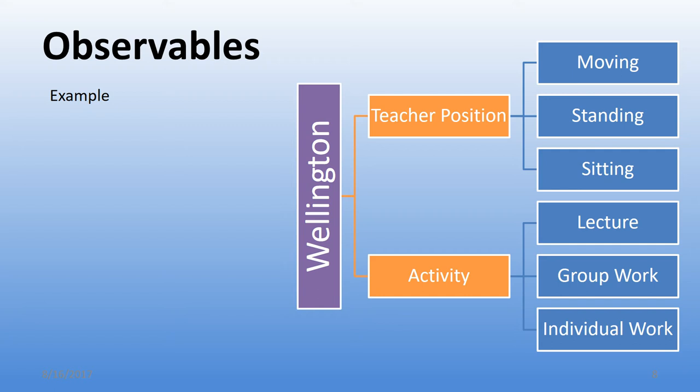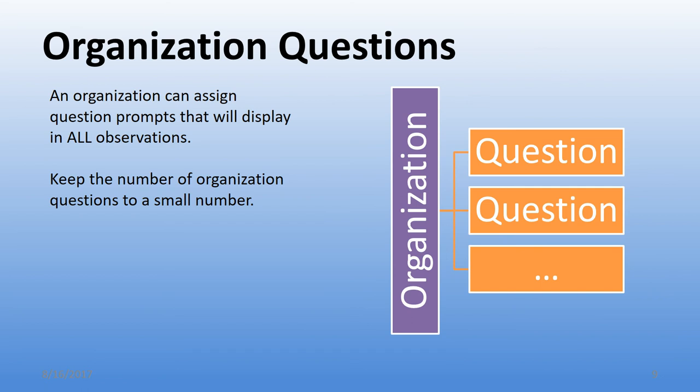Another observable might be activity type: is it a lecture, group work, or individual work? You would flip between those as the teacher changes what's happening in the classroom. This makes longer observations valuable on their own, showing a time plot of what occurred. Statistically, with many observers over time across a variety of classes, you can determine whether too much effort is being spent in one observable area.